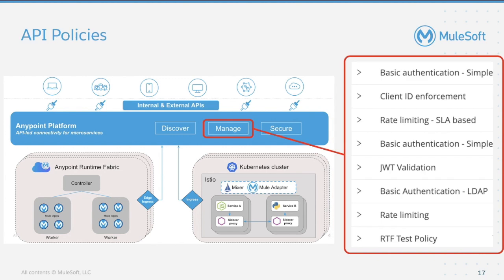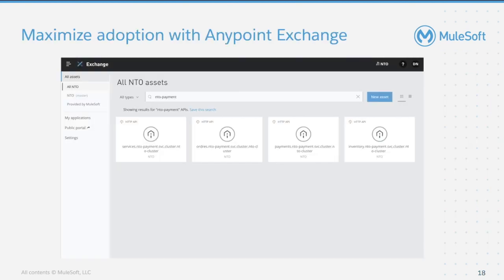In this slide, you can see all the API policies that are currently available for service mesh to use on any of the microservices. Additionally, you can expose all non-Mule applications via Exchange along with Mule applications, and can visualize metrics in the form of dashboards, set up alerts, download reports, and more.